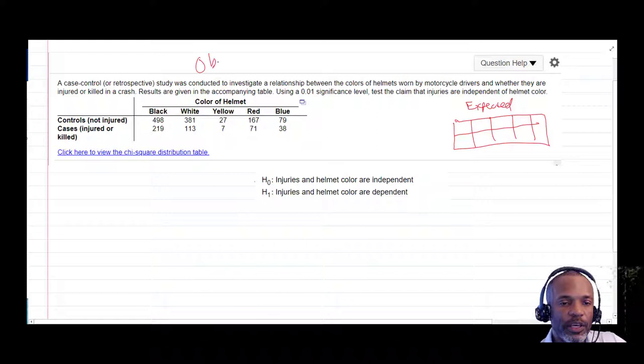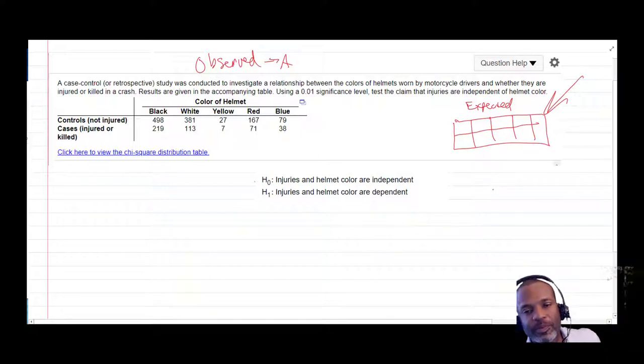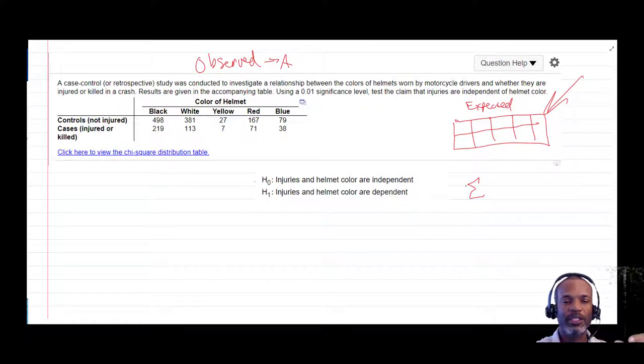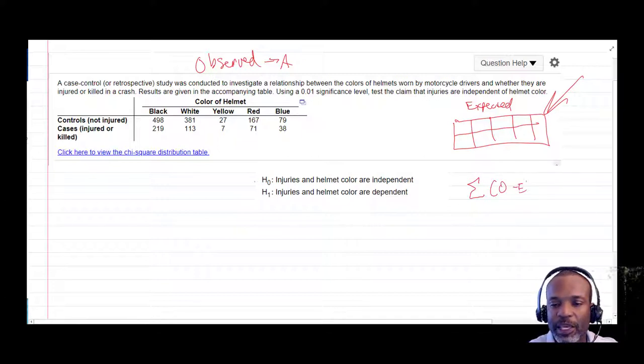But over here we have observed. So what we're going to do is take this information and populate it into matrix A, put it into our calculator, and your calculator will generate the expected values. Once we get observed, once your calculator generates the expected values, it will also go into each cell and do the observed minus the expected squared divided by expected. And do that for the 498 and its expected value, 381 and its expected value. So these expected values are based upon the assumption of independence. And we won't do this by hand. Like I said, we'll use the calculator to generate those, that sum.